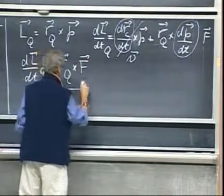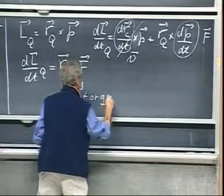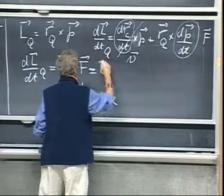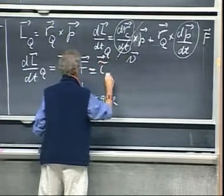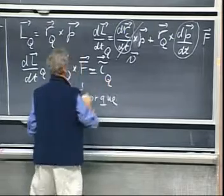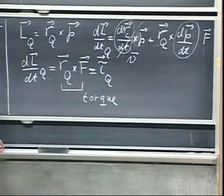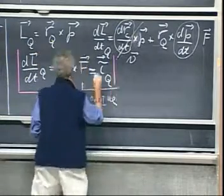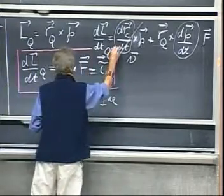And this now is what we call torque. And we write for that the symbol tau. It is a vector, and I put in that Q again. And this is one of the most important equations that will stay with us for at least five lectures.